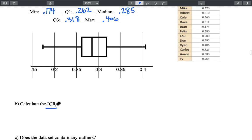However we want to make sure we can identify exactly what those outliers are. So we're going to start off by finding our IQR. Remember that's Q3 minus Q1. So that's going to be 0.318 minus 0.262. When we do that calculation we are going to get 0.056.